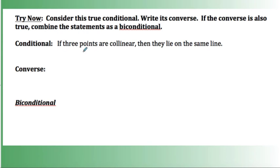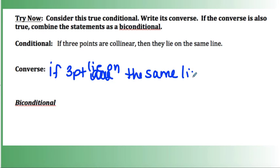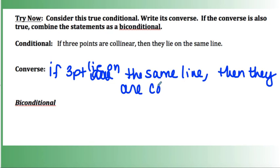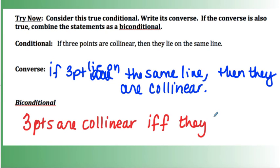Now you try: 'If three points are collinear, then they lie on the same line.' Write the converse, then write the bi-conditional, then press pause and check. The converse would be: 'If three points lie on the same line, then they are collinear.' The bi-conditional: 'Three points are collinear if and only if they lie on the same line.'